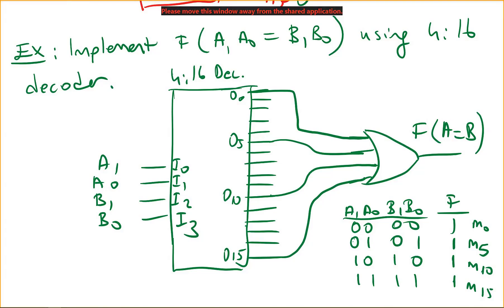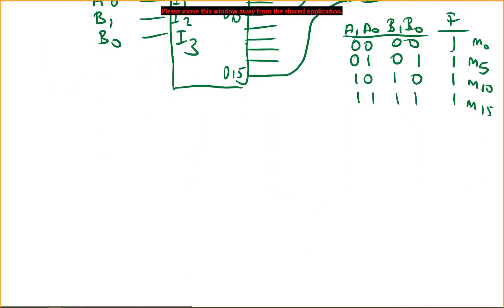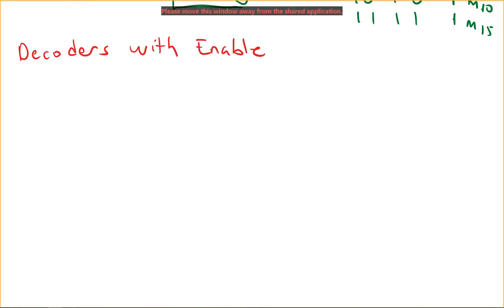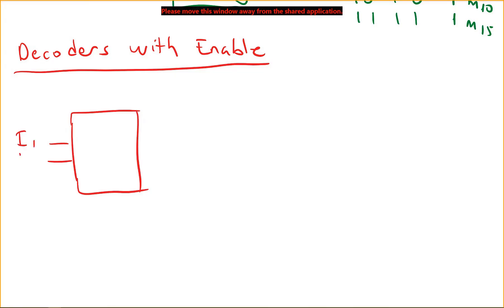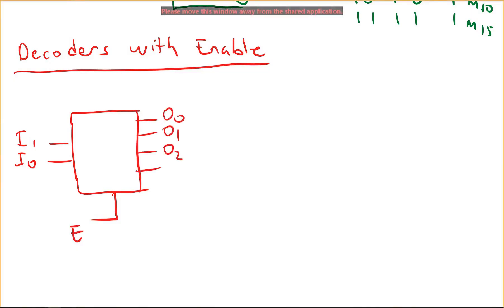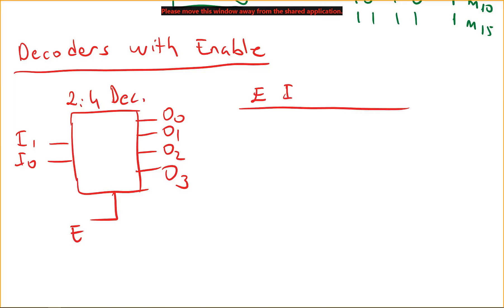Now let's look at decoders with an enable signal. We can implement decoders with an enable signal — if the decoder is not enabled, it will not work. Let's use a two-to-four decoder as an example, with two inputs i1 and i0, an enable signal, and four outputs. We'll write the functionality table for this decoder with enable.